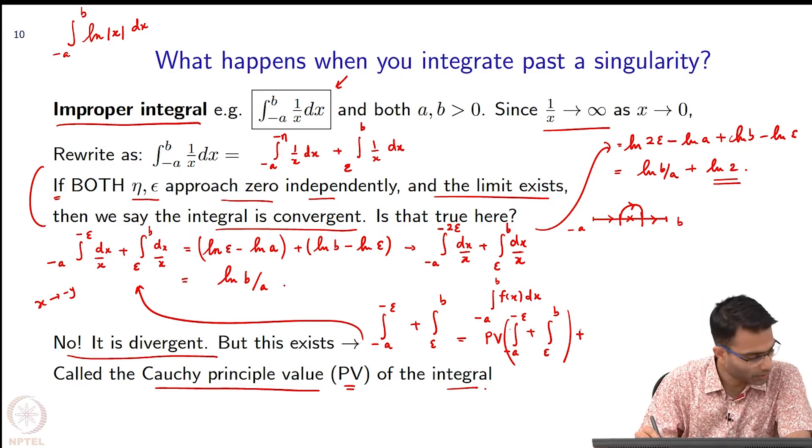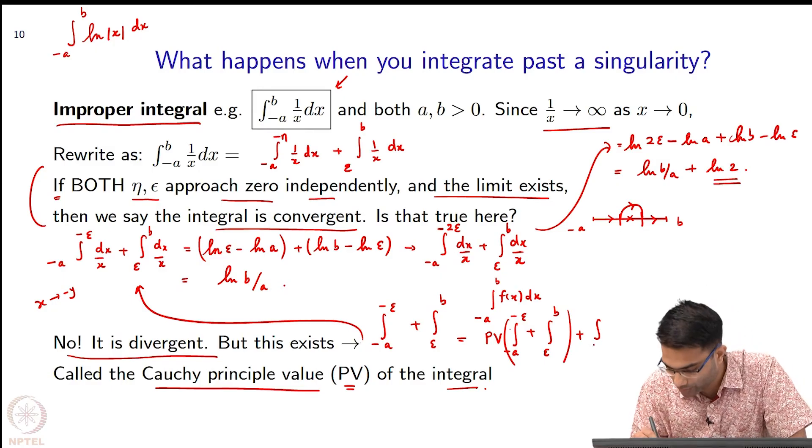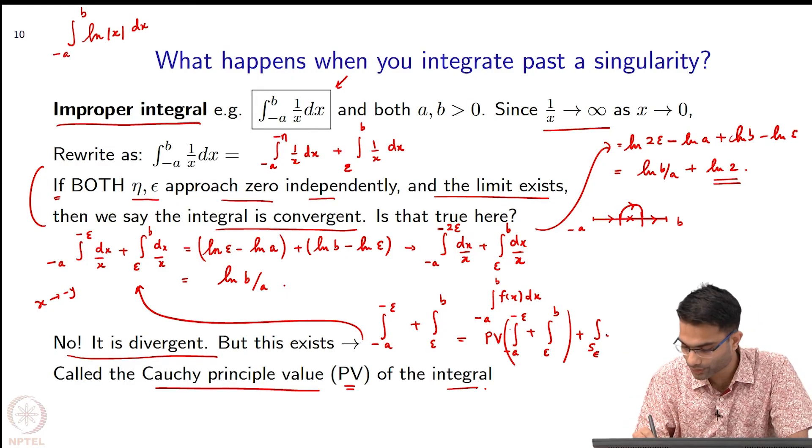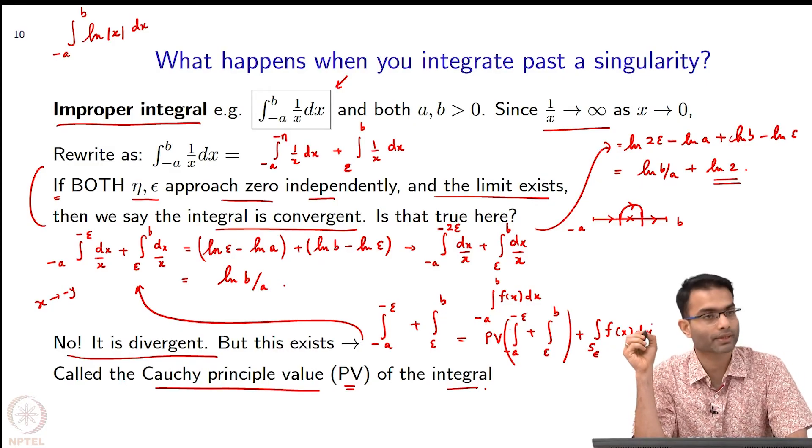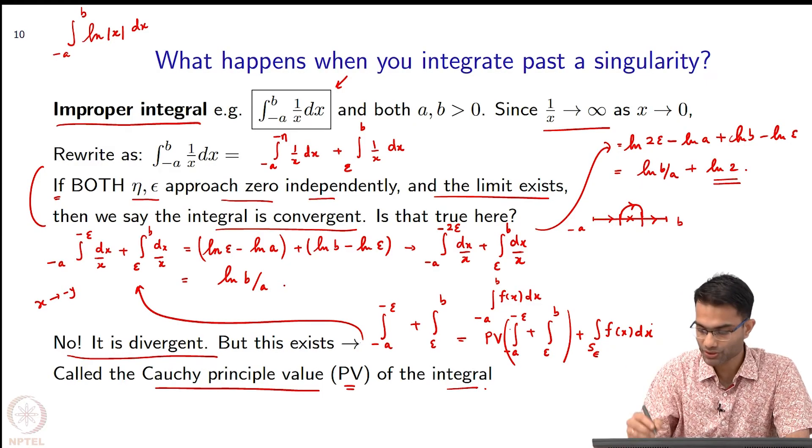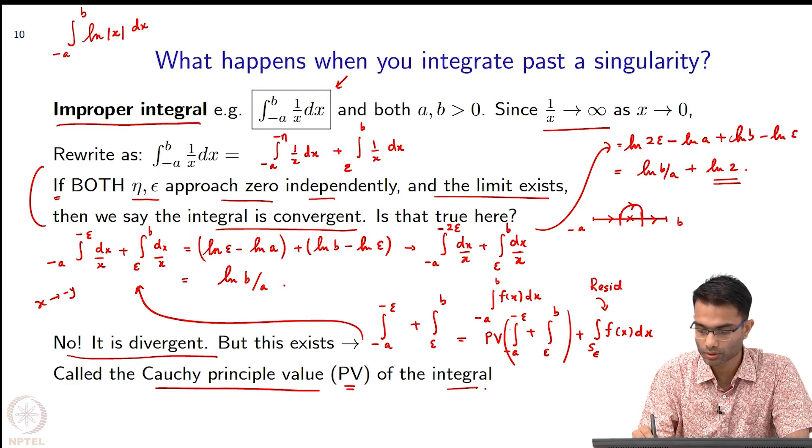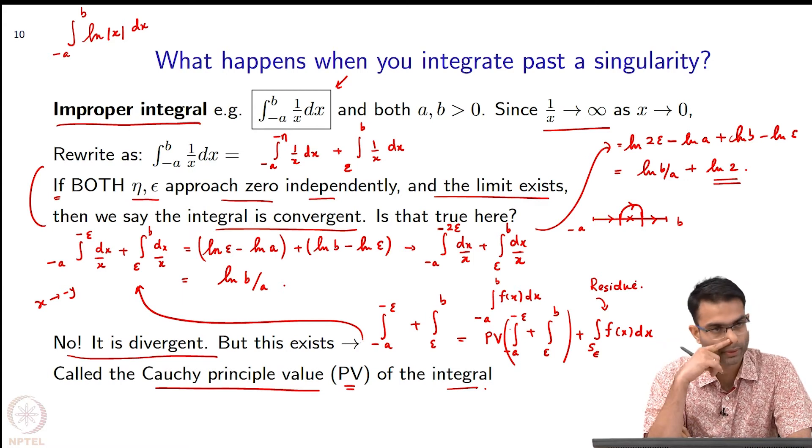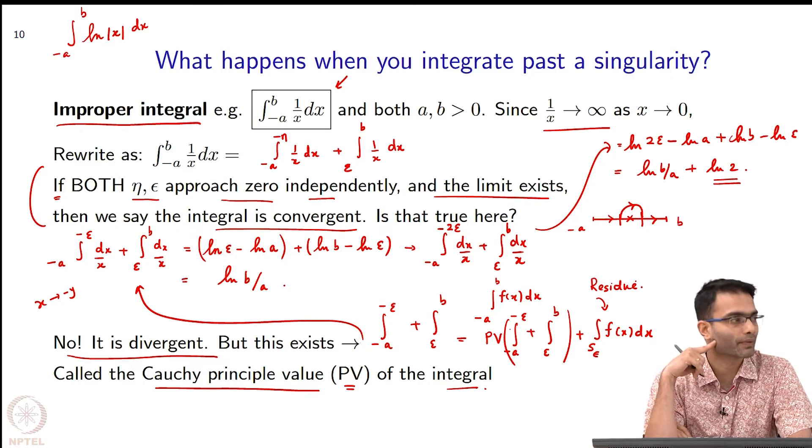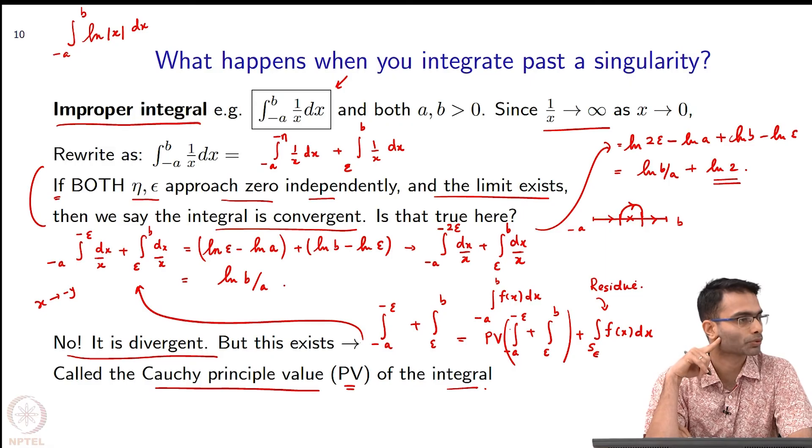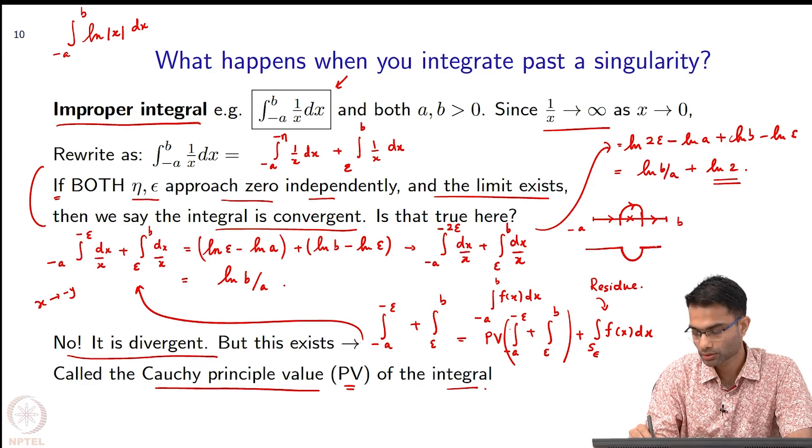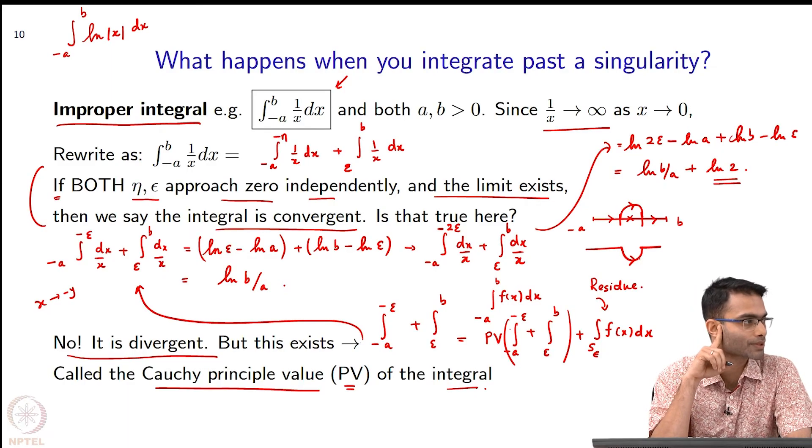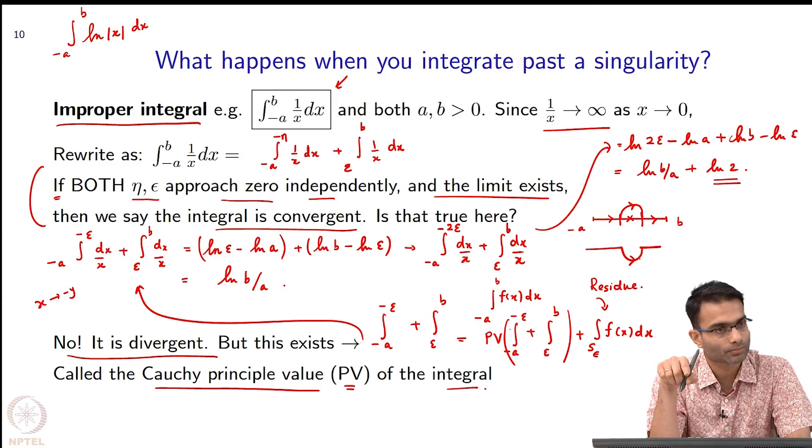The way around it is I have to somehow avoid the singularity by jumping around it. That becomes what is called - I can write that as an integral over some contour that does not go into the singularity. This is also called the residue. That is the total integral. Now, there is a little bit of ambiguity here. How do I choose this deformation contour? Could I have chosen it like this? Yes I could have.